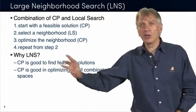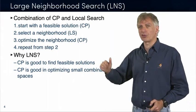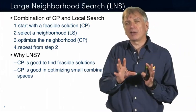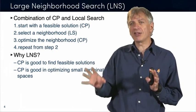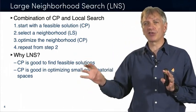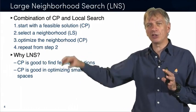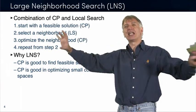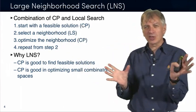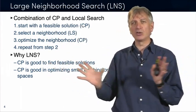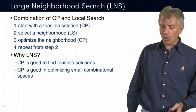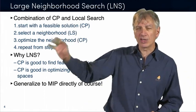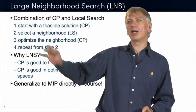So, why do we use LNS? Two reasons. First, CP is very good for finding feasible solutions and for optimizing very small combinatorial space. So in a sense, you exploit the two strengths of CP for finding a high-quality solution and you exploit local search for scalability. So you exploit the two facets of these two techniques and put them together. Of course, you can generalize that to MIP. You can find a feasible solution using MIP and you can explore the neighborhood using MIP. That works as well.